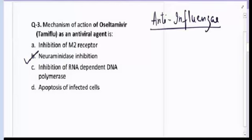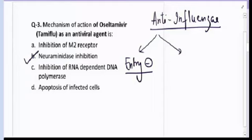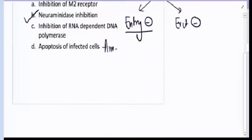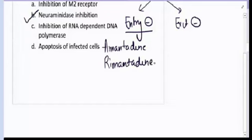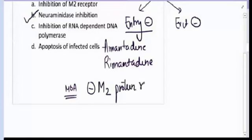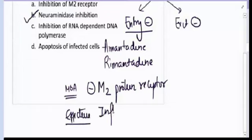There are two kinds of anti-influenzal drugs: entry inhibitors, which inhibit the entry of virus into the cell, and exit inhibitors, which inhibit the release of virus from the cell. Entry inhibitors include amantadine and rimantadine. Their mechanism of action is they inhibit M2 protein receptor on the cell, and they are only effective against influenza type A.